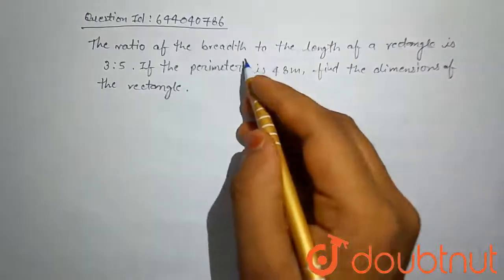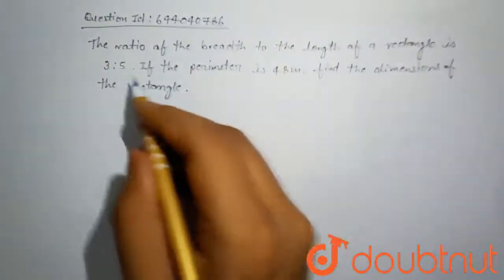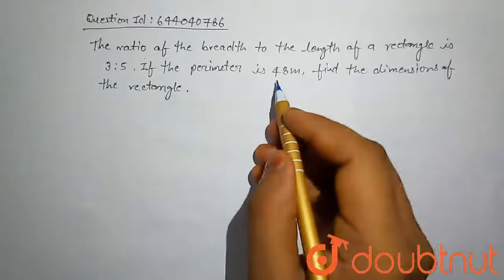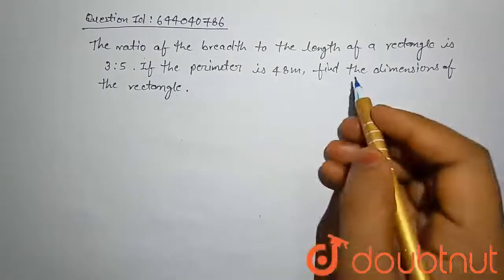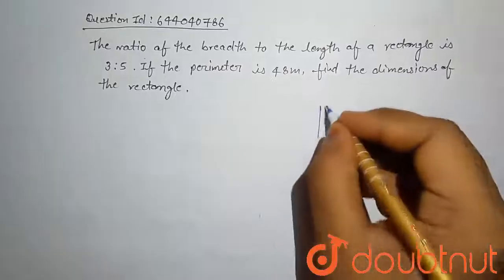The ratio of breadth to length of a rectangle is 3 to 5. If the perimeter is 48 meters, find the dimension of the rectangle. Let's draw the rectangle.